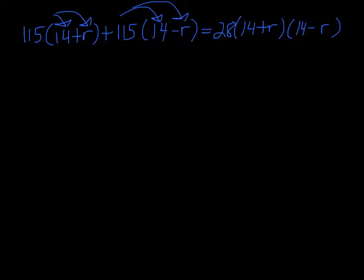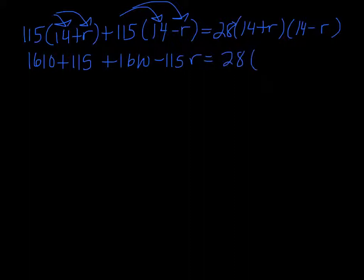The 115 has to be distributed in both of those. 115 times 14 is 1610, so I get 1610 plus 115r plus 1610 minus 115r. On the right side I can multiply out the 14 plus r and 14 minus r, so 14 squared is 196, so we get 196 minus r squared.